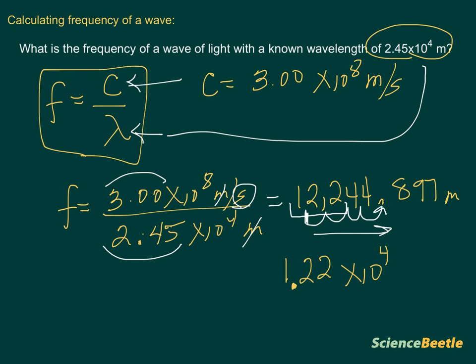However, when you do this, you've got to make sure you write down the units. And so we'll make sure we write the units down here at the bottom. Meters. And this here is the answer for our problem. Which means that the frequency for a wave that has a wavelength of 2.45 times 10 to the 4 is going to be 1.22 times 10 to the 4.